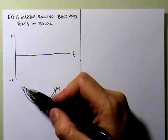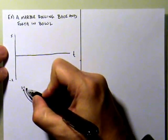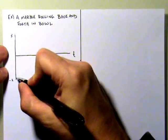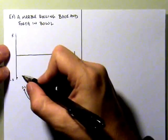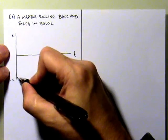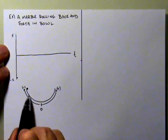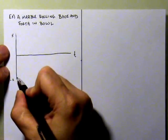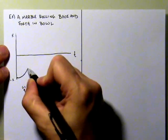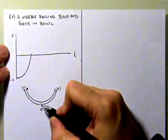At the beginning of this situation, we are at a maximum negative position and we're going to release this object with no velocity. So our initial position looks something like this — we're down here at a negative position, and more importantly, we have no velocity, so the slope would be very flat at the beginning. No slope, no velocity. What's going to happen is I'm going to pick up velocity traveling in the positive direction, so the slope is going to have to get steeper and steeper and steeper.